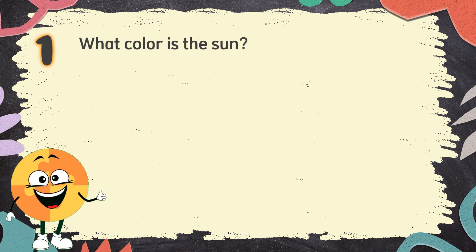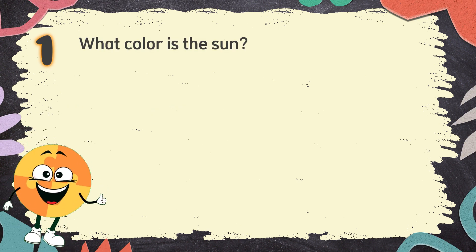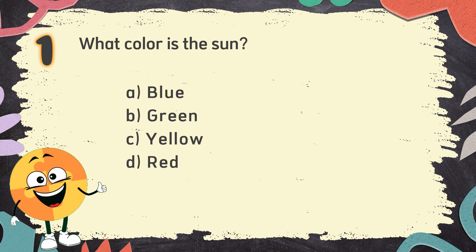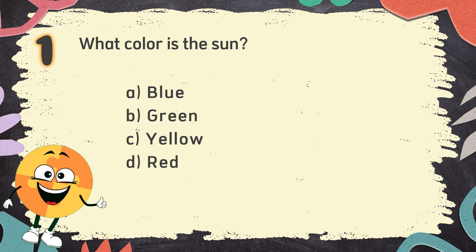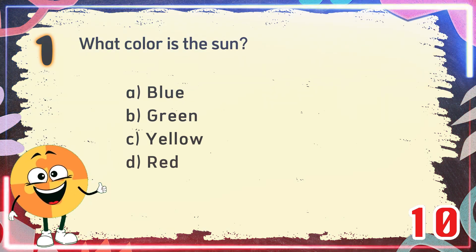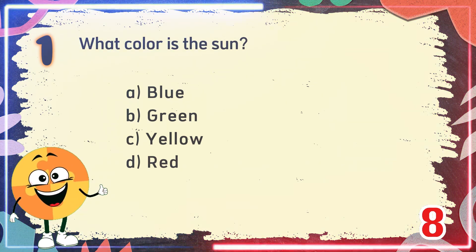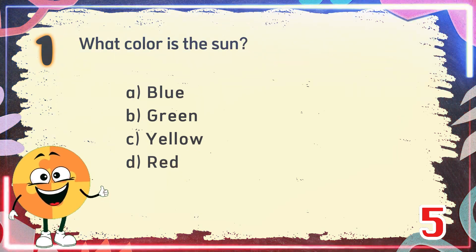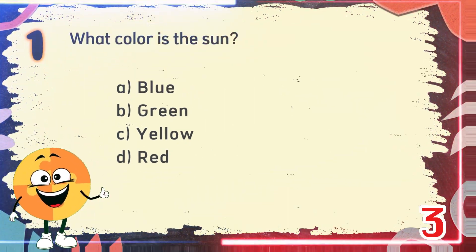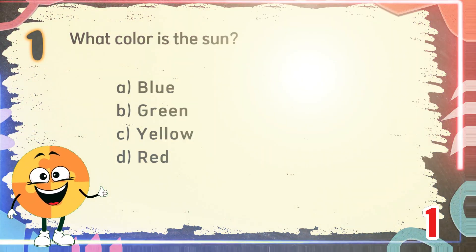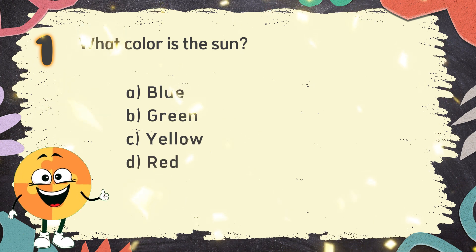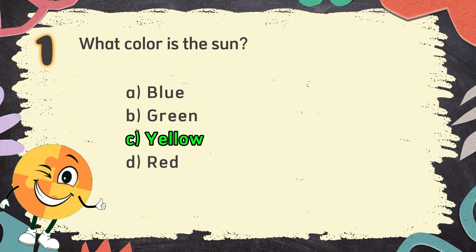Number 1. What color is the sun? The choices are A. Blue, B. Green, C. Yellow, D. Red. The correct answer is C. Yellow.